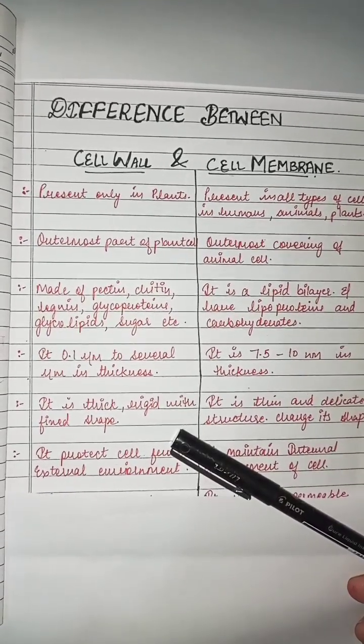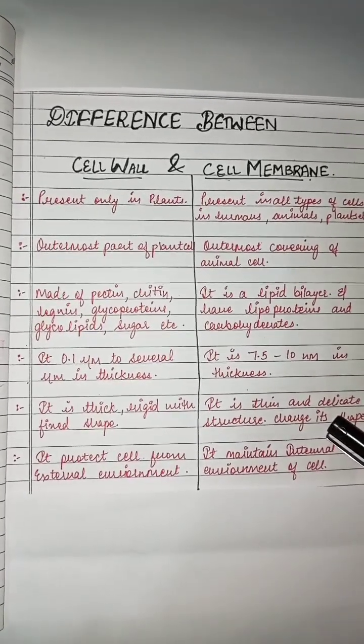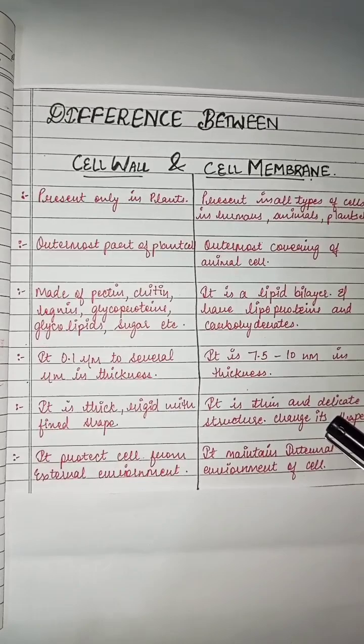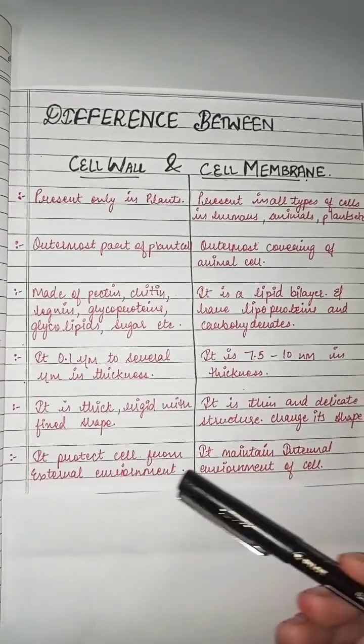The cell wall is fully permeable, whereas the cell membrane is semi-permeable. The cell wall protects the cell from the external environment, whereas the membrane protects...